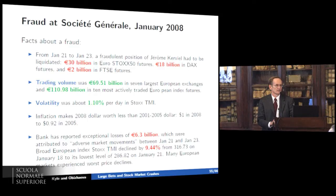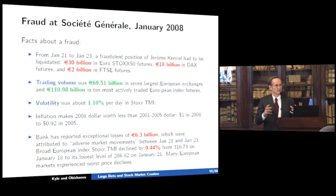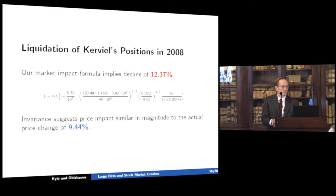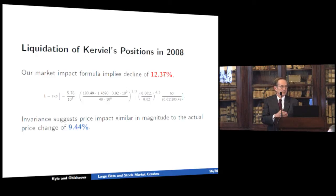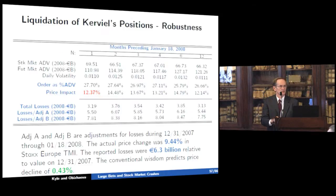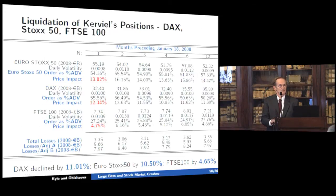For the Societe Generale fraud, involving several different European markets, Societe Generale reported losses of 6.3 billion dollars. Plugging the numbers into our formula, we predicted a decline of 12.37% in the market — what Societe Generale could have predicted using our formula. The actual decline was 9.44%, which we think is a very reasonable prediction. The actual amount of money lost was also very similar to what we estimated: our numbers range from 3 to 8 billion depending on how we look at them.